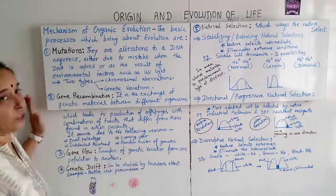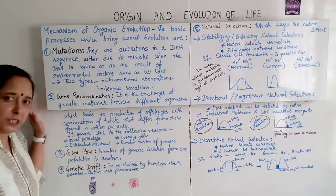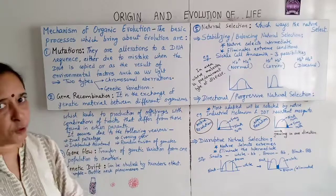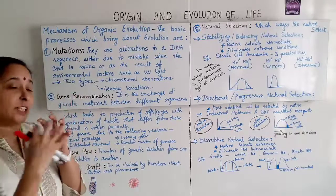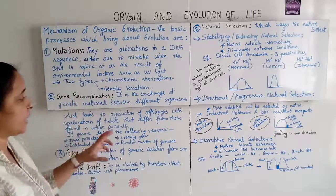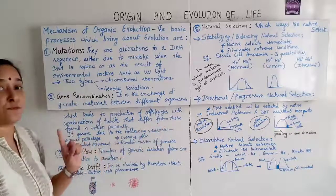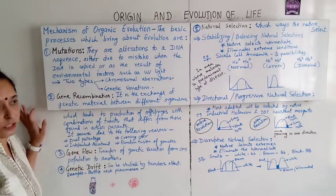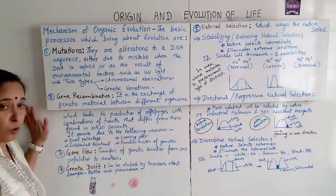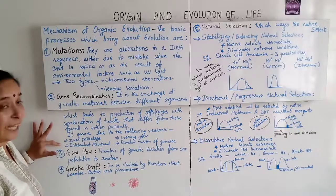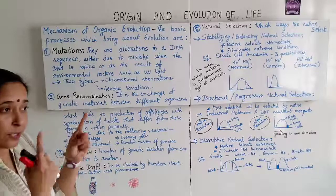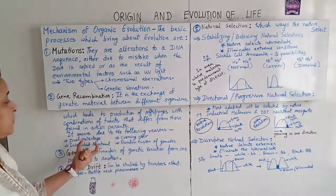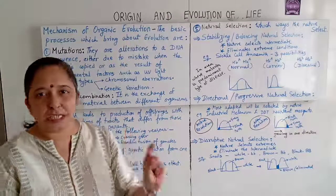Gene recombination is the exchange of genetic material between different organisms, leading to production of offspring with a combination of traits from both parents — traits that differ from either parent alone. Gene recombination occurs due to dual parentage, independent assortment, crossing over, and random fusion of gametes.